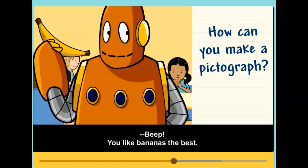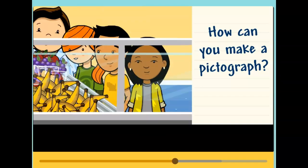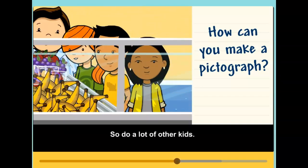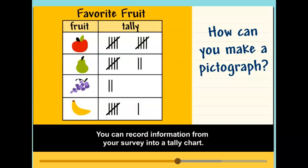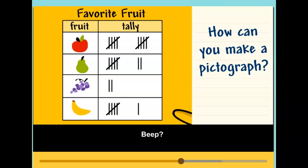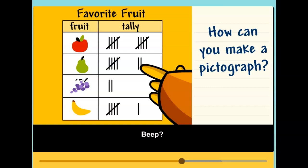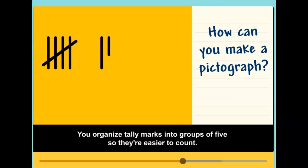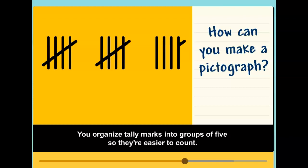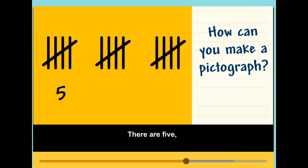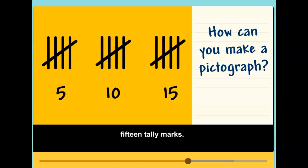You like bananas the best, and so do a lot of other kids. You can record information from your survey into a tally chart. You organize tally marks into groups of five so they're easier to count. There are five, ten, fifteen tally marks.